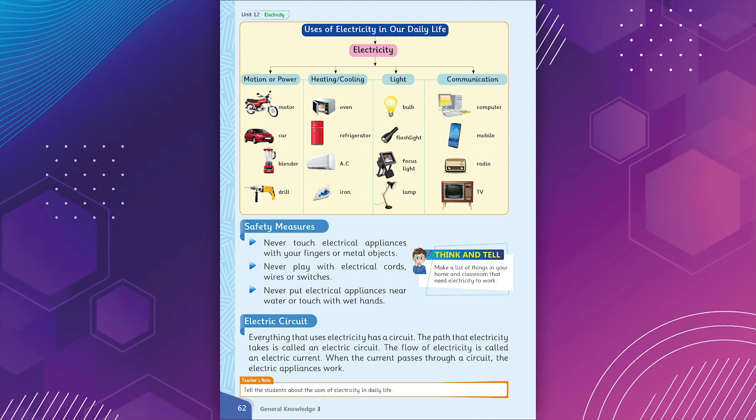Electric Circuit. Everything that uses electricity has a circuit. The path that electricity takes is called an electric circuit. The flow of electricity is called an electric current. When the current passes through a circuit, the electric appliances work.